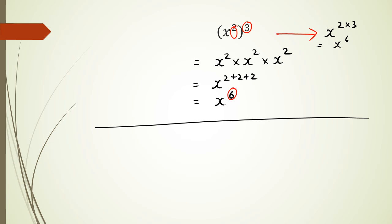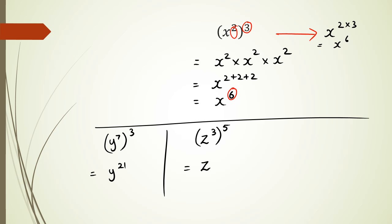A couple of quick examples: if I have y to the power of seven to the power of three, then this is equal to y to the power of 21. Or if I have z to the power of three to the power of five, then this is going to be z to the power of 15 — three times five is 15. Okay, that's to start things off.